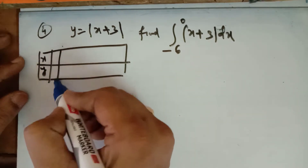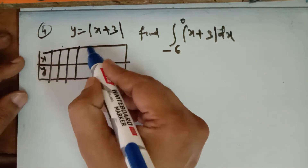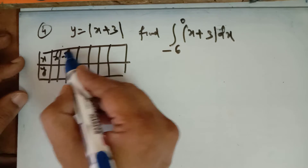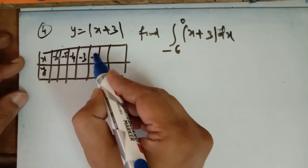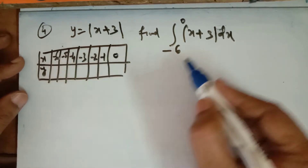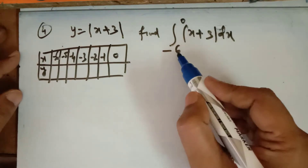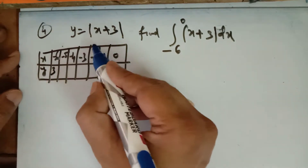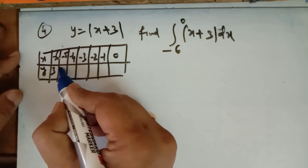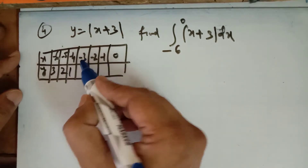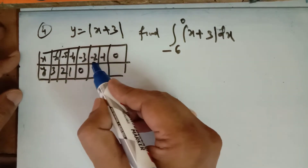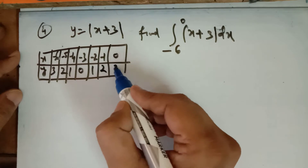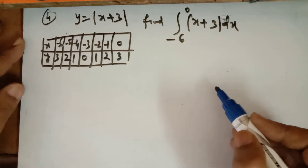Making a table: for x = −6, |−6+3| = |−3| = 3; for x = −5, it is 2; for x = −4, it is 1; for x = −3, it is 0; for x = −2, it is 1; for x = −1, it is 2; and for x = 0, it is 3. Now you can easily sketch this graph.